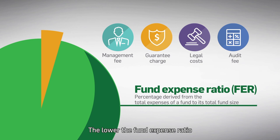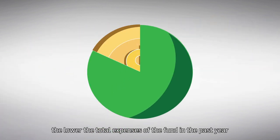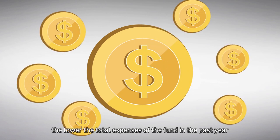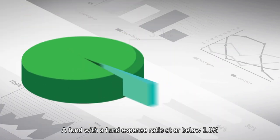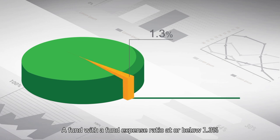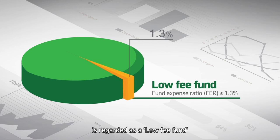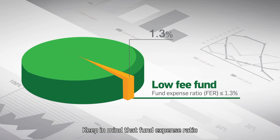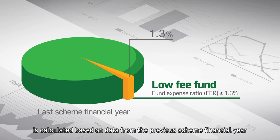The lower the fund expense ratio, the lower the total expenses of the fund in the past year. A fund with a fund expense ratio at or below 1.3% is regarded as a low-fee fund as defined by the MPFA. Keep in mind that fund expense ratio is calculated based on data from the previous scheme financial year.